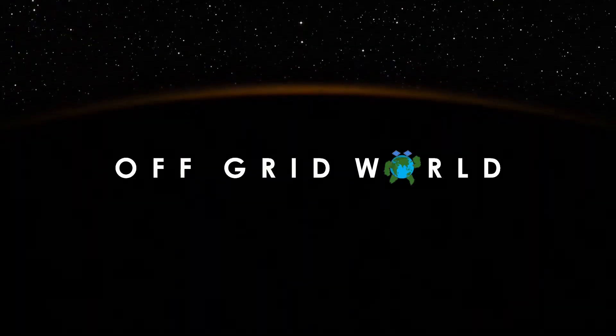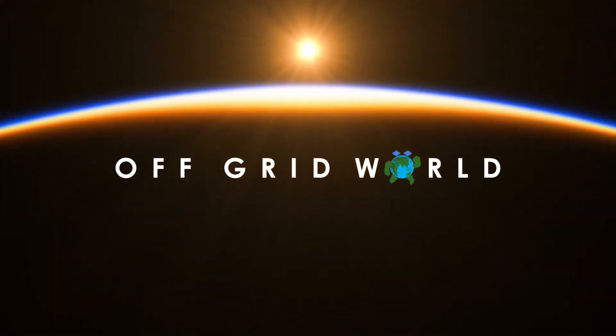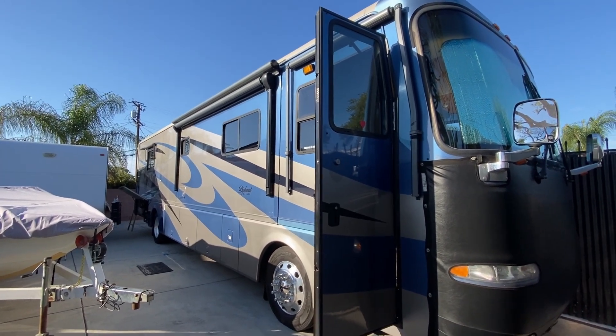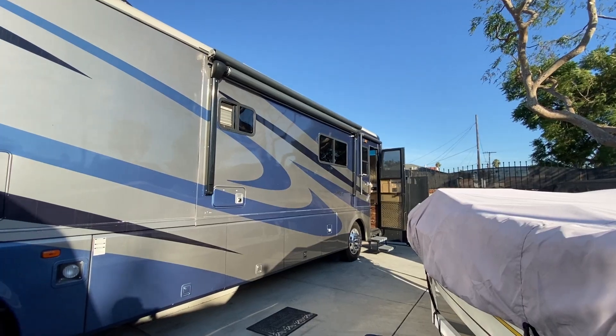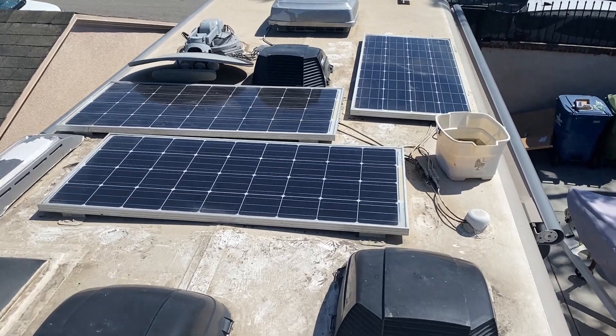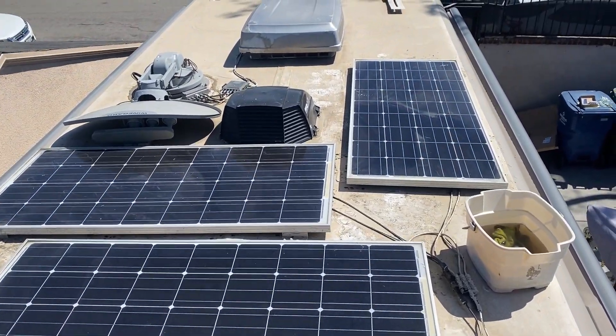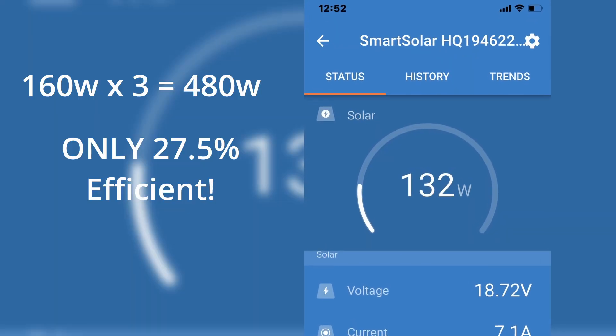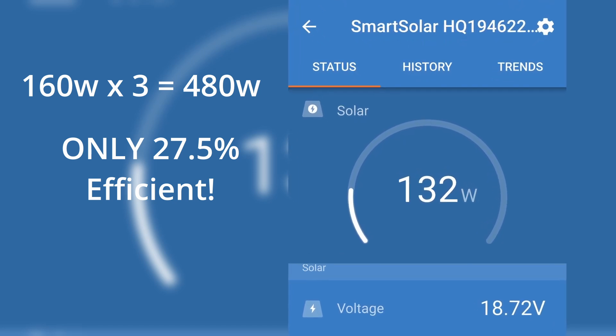I got a call for an RV with some solar issues and they also want to increase their solar, so we're going to go check it out. This 2008 Diplomat RV currently has three 160 watt solar panels on the roof but they're only producing 132 watts of power during peak sunlight, so I knew something was wrong.